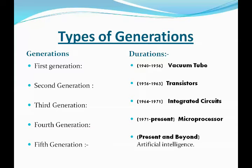There are 5 types of generations. First generation: duration 1940–1956, invention: vacuum tube. Second generation: duration 1956–1963, invention: transistor. Third generation: duration 1964–1971, invention: IC (integrated circuit). Fourth generation: invention: microprocessors. Fifth generation: present and beyond, artificial intelligence.